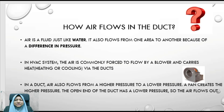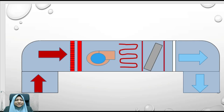To summarize the movement of air: the fan creates a higher pressure, and the end of the duct is an open end with lower pressure, so the air flows out — because air always flows from high pressure to lower pressure.